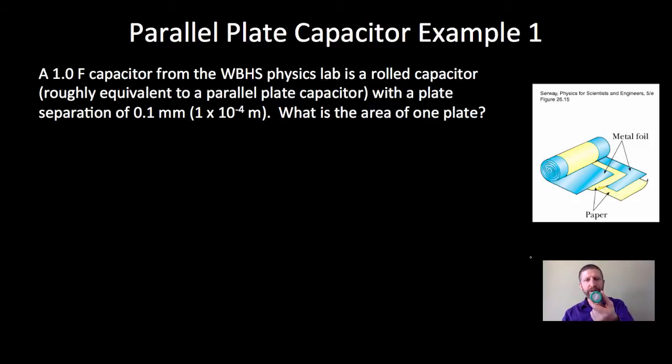And here's my one-farad capacitor. A one-farad capacitor from the WBHS physics lab, here it is, is a rolled capacitor, roughly equivalent to a parallel plate, with a plate separation of 0.1 millimeters. That's the thickness of what in this diagram? That is the paper thickness in this diagram. This paper right there is 0.1 millimeters thick. And that's what's separating the plates.